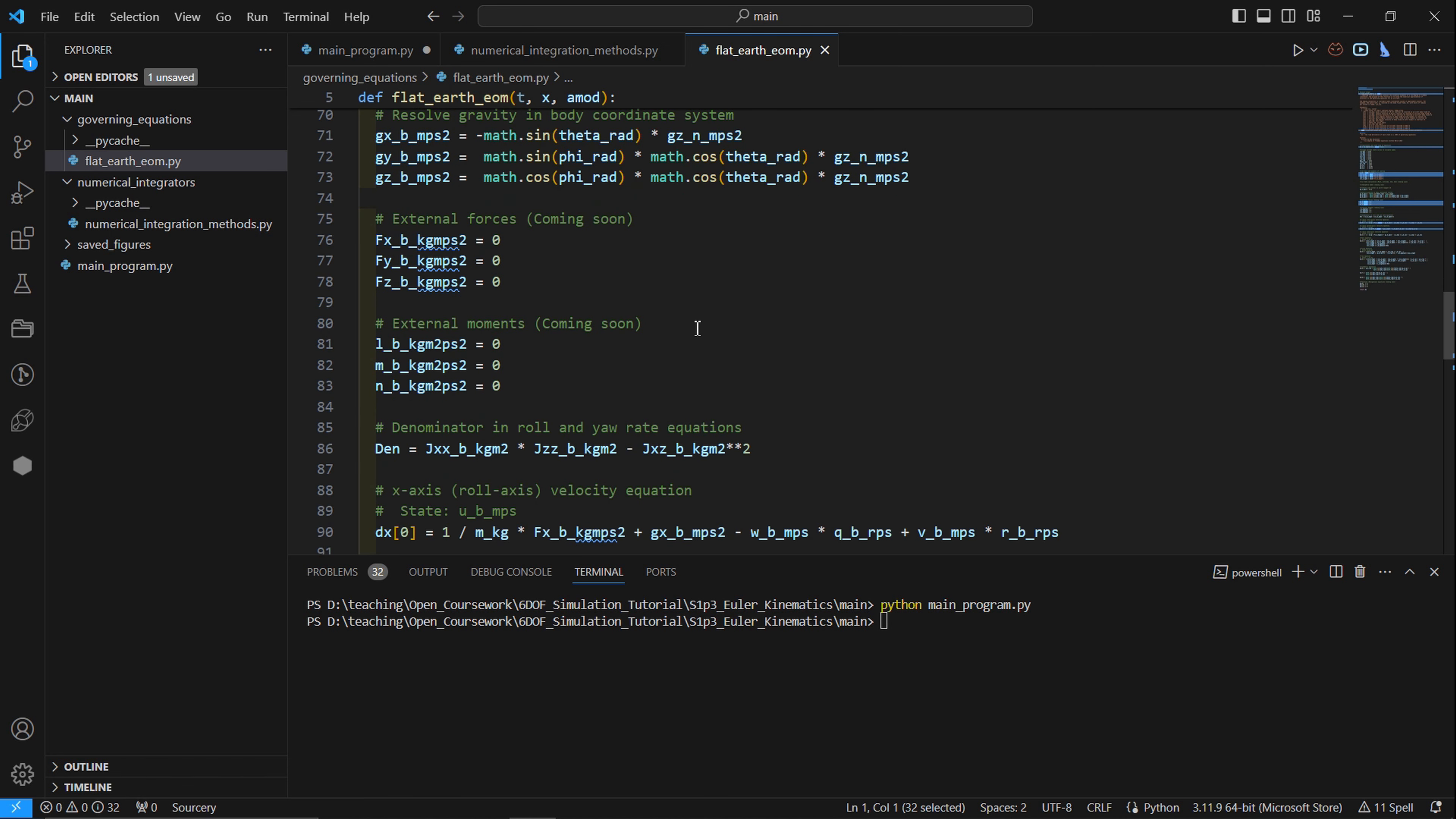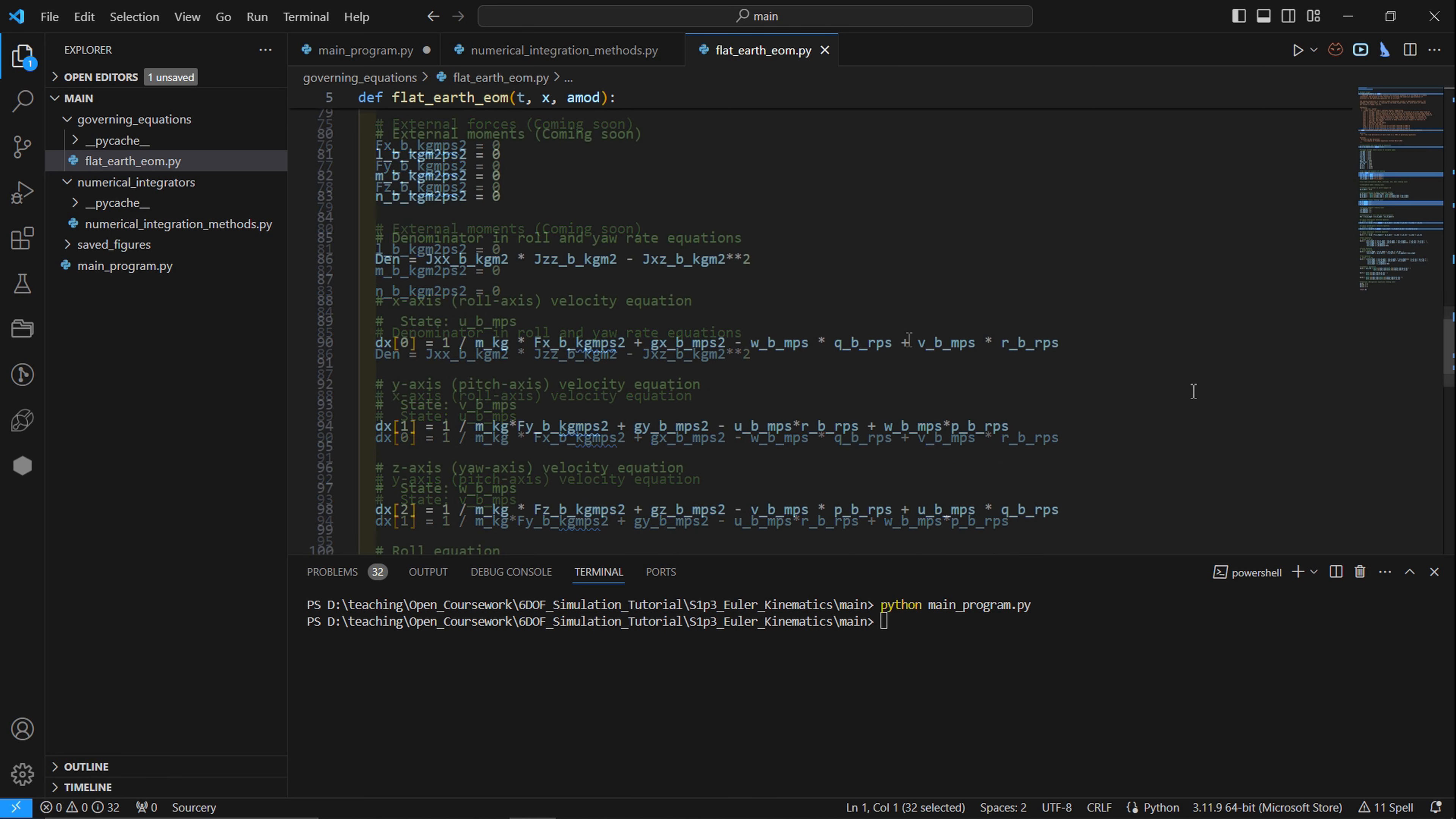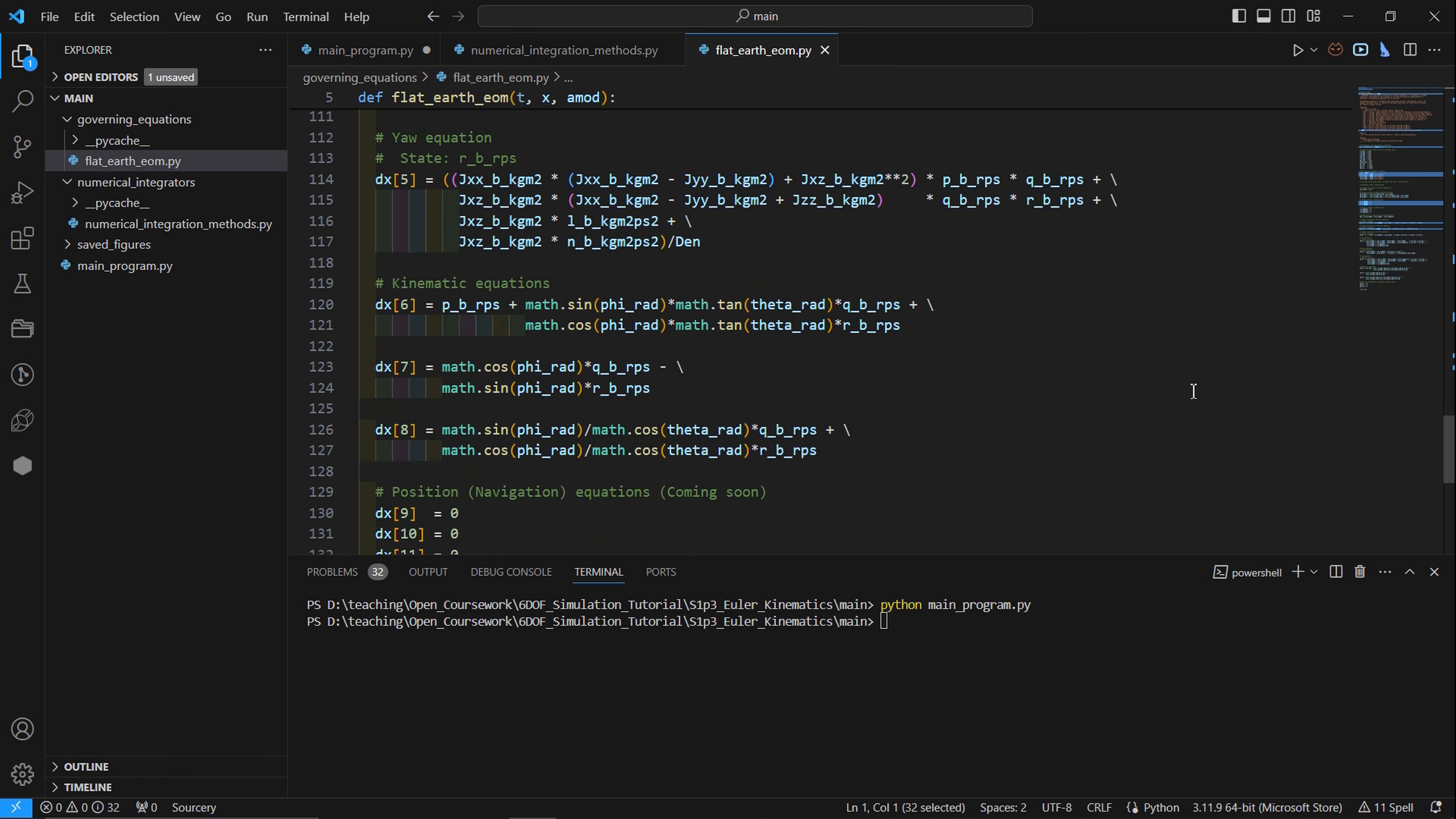So as the vehicle pitches and rolls, gravity will point in the body reference system in different directions. Of course, it's always pointing down in the northeast down coordinate system. External forces and moments set to zero because we do not have an aerodynamic model, nor do we have an atmospheric model. So it's as if this sphere is just flying through space. Going on to our translational and rotational equations. We reviewed these last time, so we won't dwell on them here.